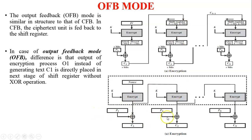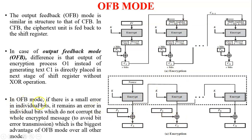In OFB mode, if there is a small error in individual bits, it remains an error only in those individual bits and does not corrupt the whole encrypted message. This avoids bit error transmission propagation, which is the biggest advantage of OFB mode over all other modes. Now compare both figures — both show the encryption: the top is CFB mode and the bottom is OFB mode.